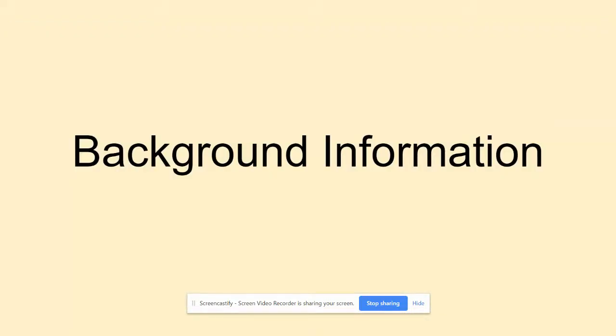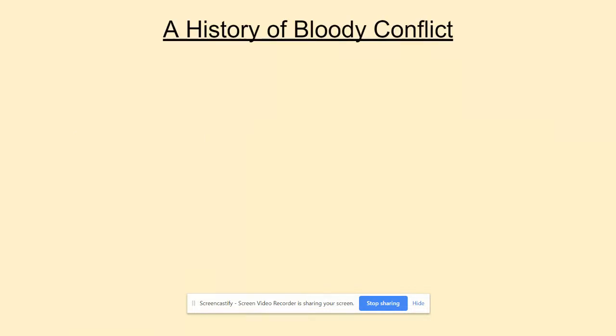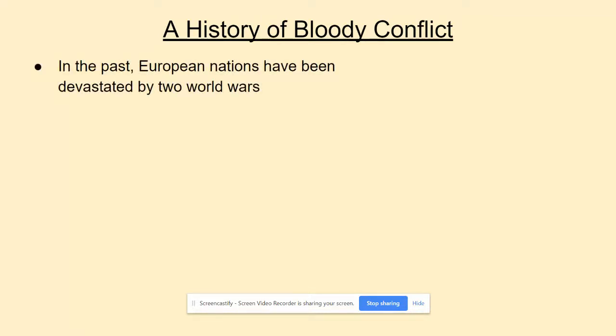Before getting into the details, we need to understand where Europe has been and why the EU exists in the first place. Going all the way back to early European civilizations, one consistent theme is conflict — there has been a lot of conflict in Europe historically. The EU is really born out of the two major world wars of recent history, which completely devastated and destroyed European nations.